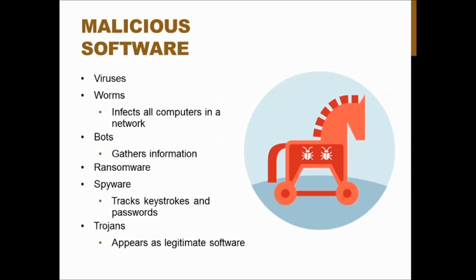There are many types of malicious software. Viruses infect the computer itself and usually come through something you download. Worms are similar but like to infect networked computers — if you download an email attachment containing a worm in a hospital setting, it could infect all computers on the network, which can be really dangerous. Bots can also be downloaded and gather information, making them dangerous for breaching patient data — for example, reading a patient chart and releasing that information.